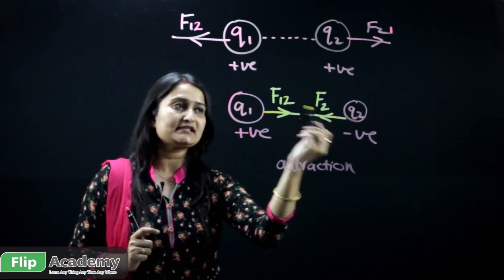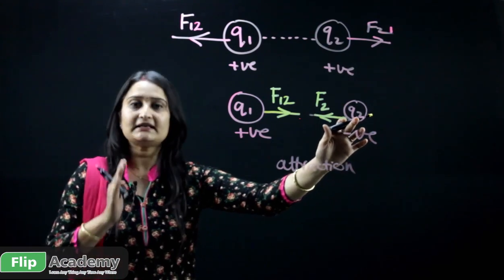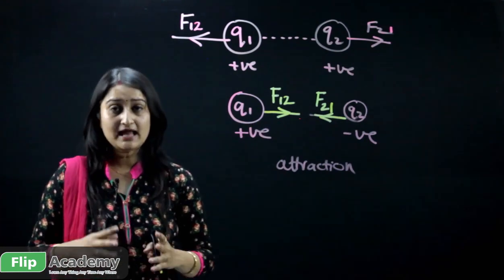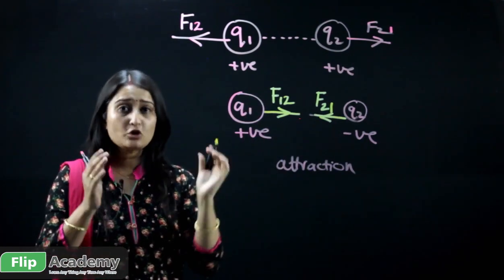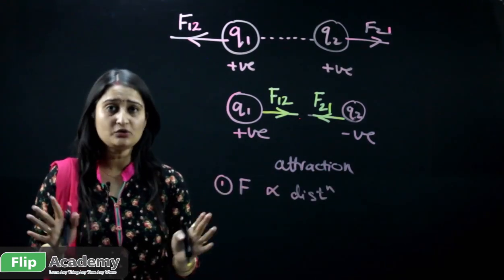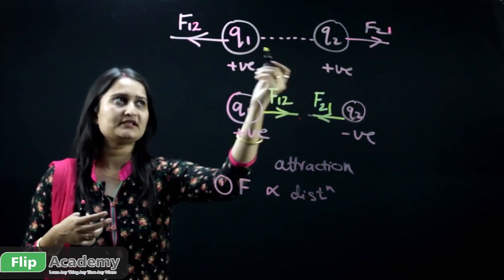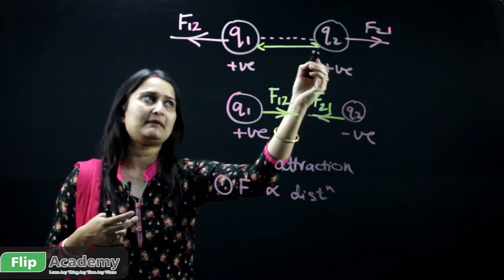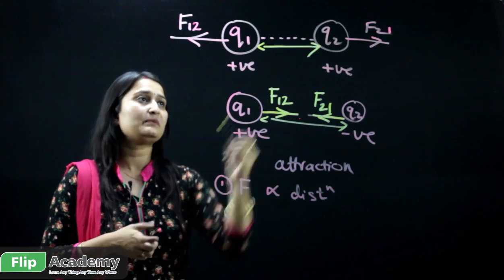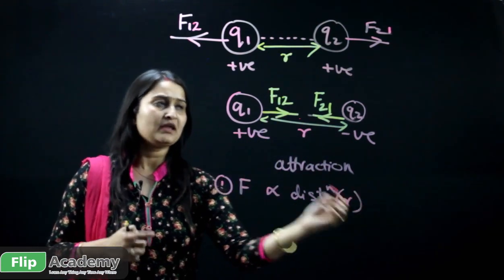Similarly, the force on Q2 exerted by Q1 can be written as F21. These forces are dependent on some parameters. Force is related to the distance — the distance being the separation between the two charges, represented by small r.